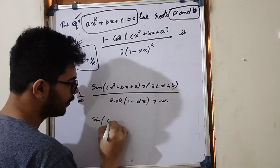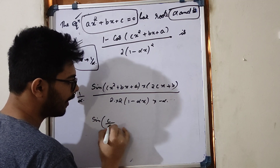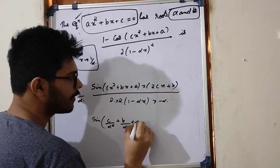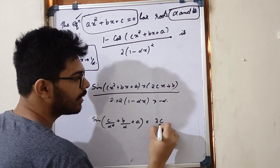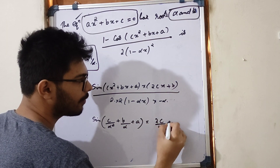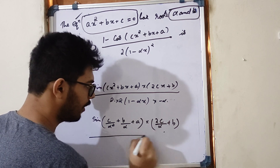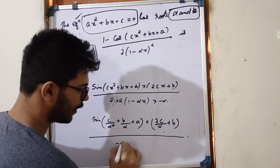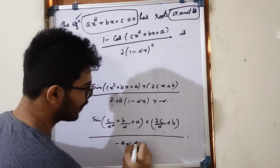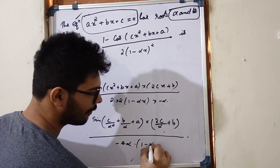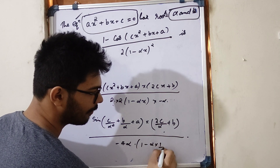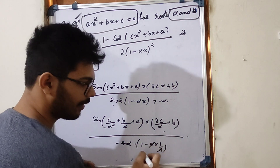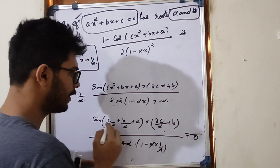We get sin(c/alpha² plus b/alpha plus a) times (2c/alpha plus b) in the numerator, divided by 2 into 4 times minus alpha, giving minus 4·alpha, into (1 minus alpha times 1/alpha). Alpha times 1/alpha equals 1, so 1 minus 1 is 0. Minus.